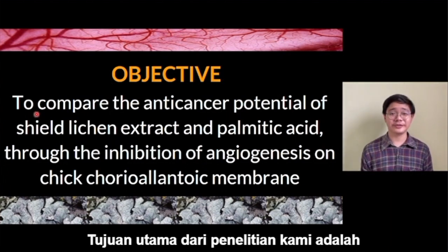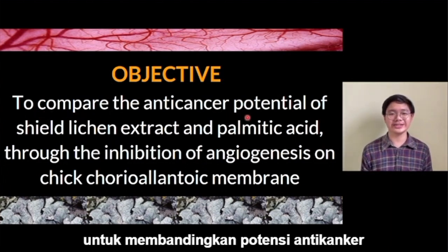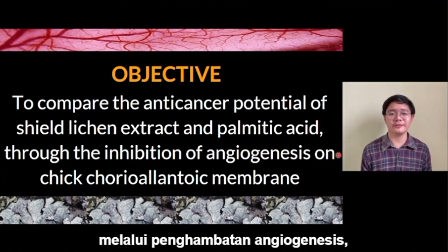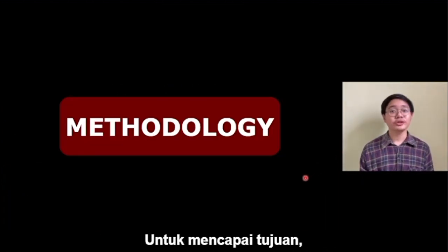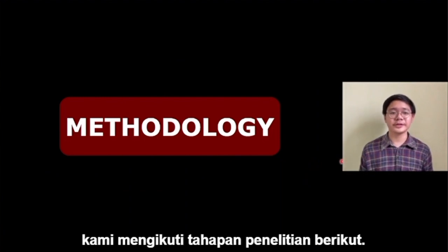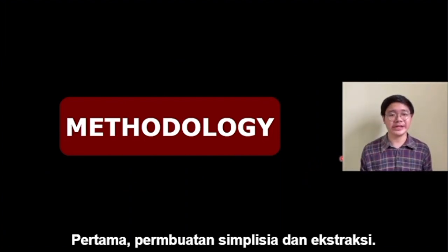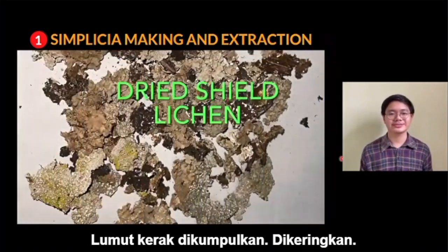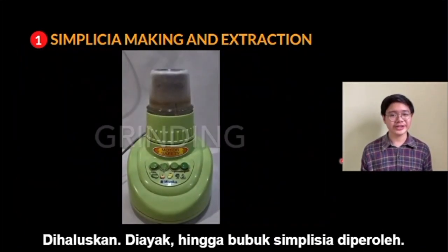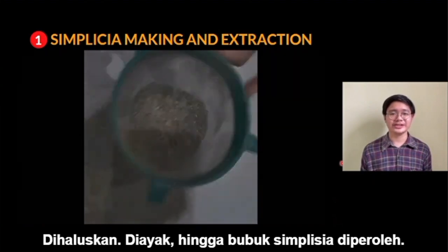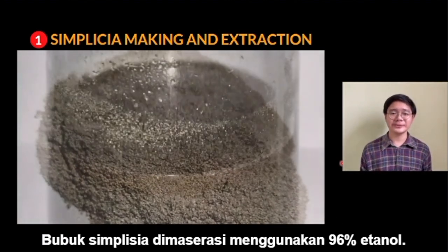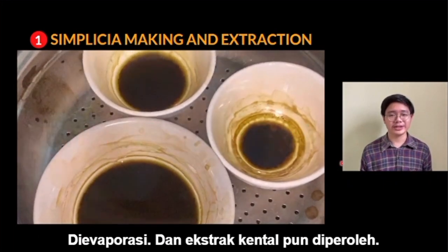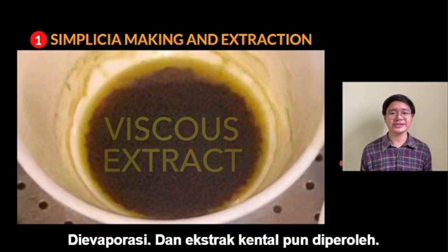The main objective of our research is to compare the anti-cancer potential of sheathlichen extract and palmitic acid through the inhibition of angiogenesis on the chorioallantoic membrane. To achieve our goal, we followed these steps of research. First is simplicia making and extraction. We gathered the sheathlichen, dried it, ground it, sifted it, until we got simplicia powder as shown. The simplicia was macerated in 96% ethanol, evaporated, and thus we obtained a viscous extract.